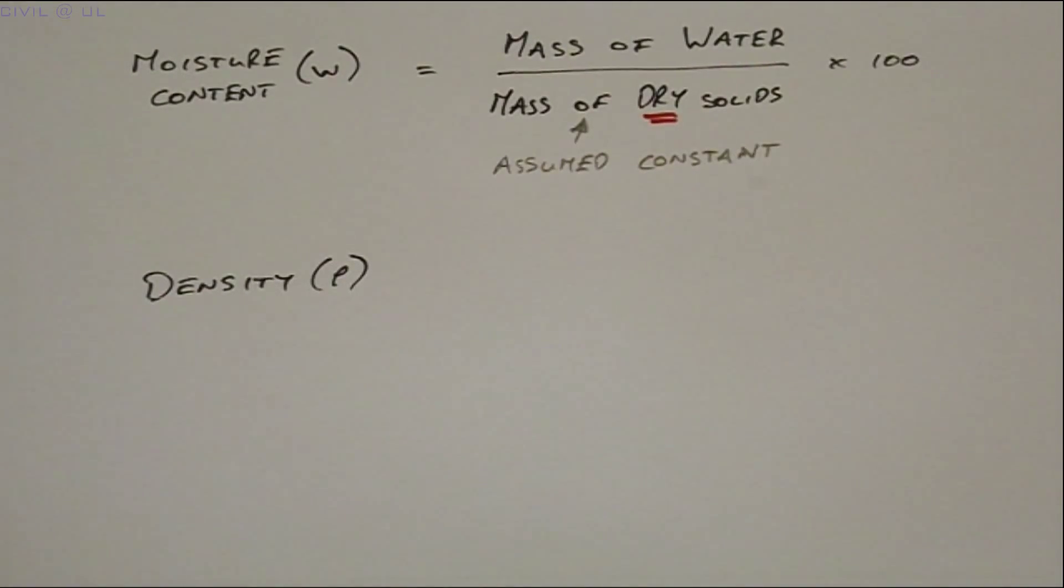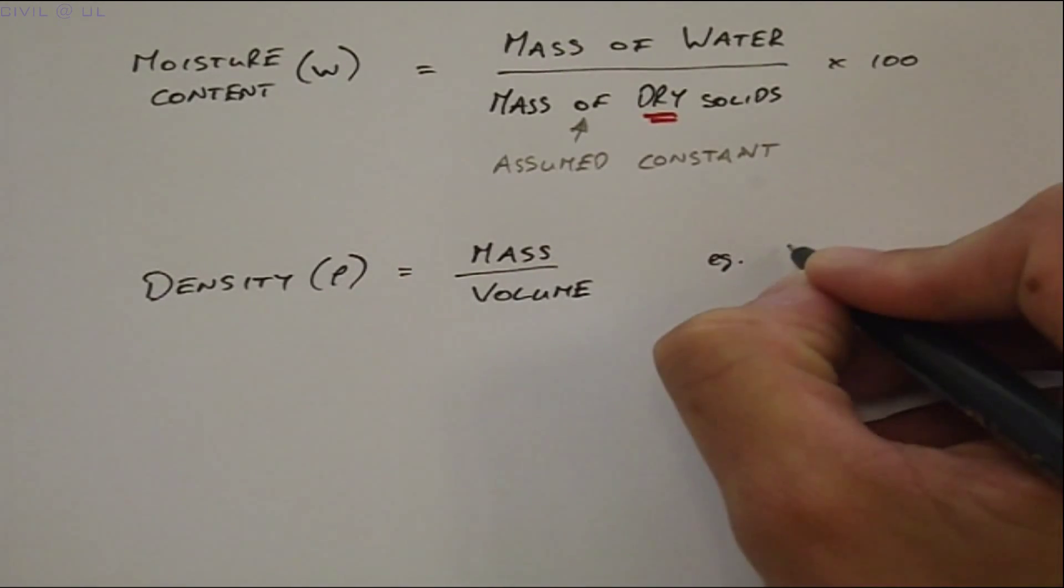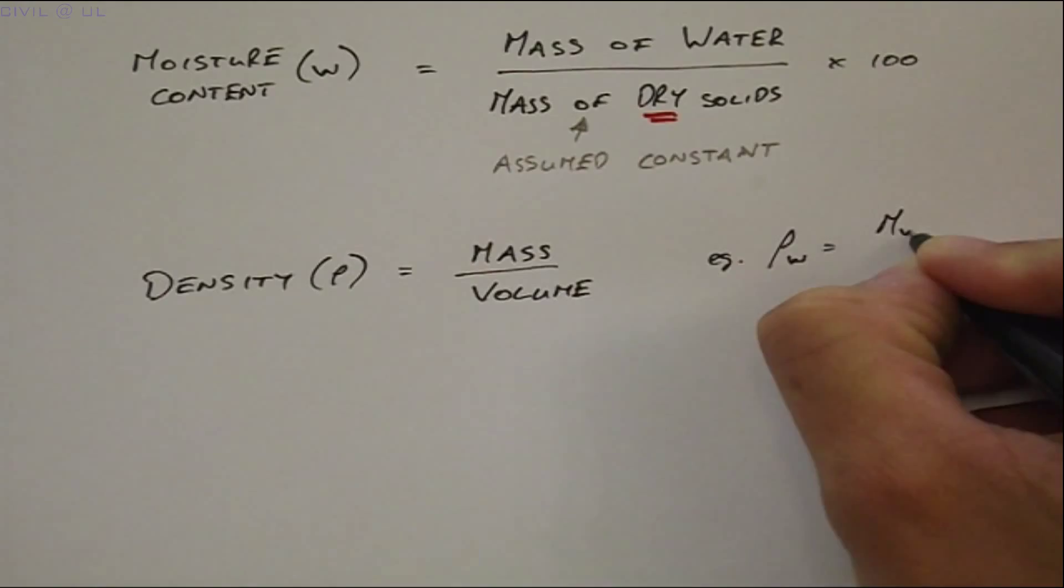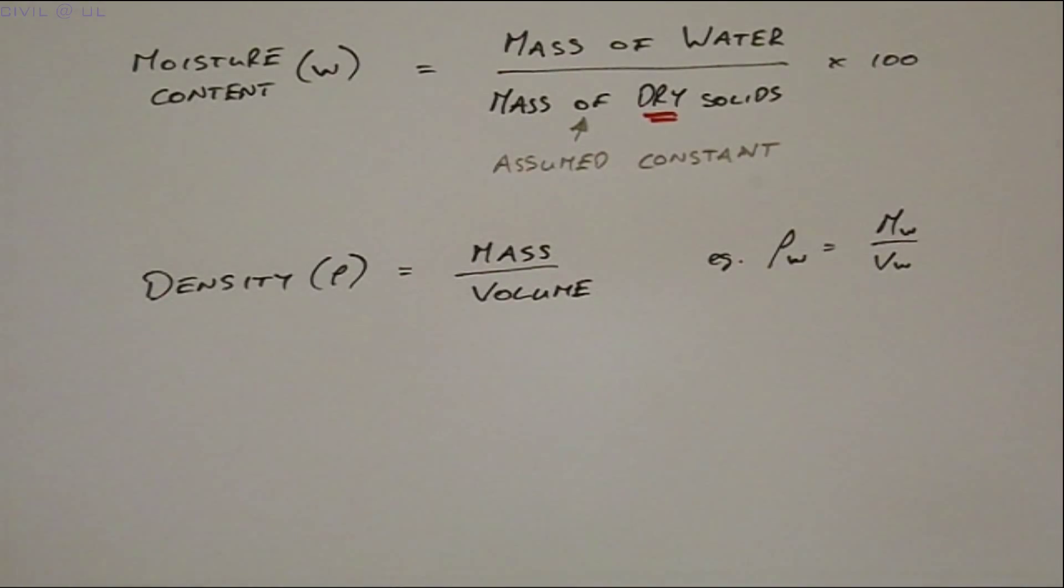Density is defined as mass over volume. So, for example, the density of water can be expressed as the mass of water divided by the volume of water.